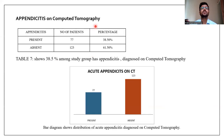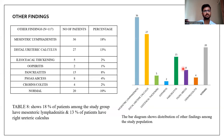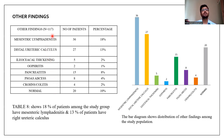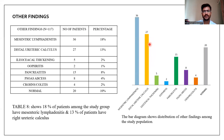On CT, 77 cases were found to have appendicitis diagnosed. Other findings which mimicked appendicitis included mesenteric lymphadenitis, distal ureteric calculi, ileocecal thickening, enteritis, pancreatitis, psoas abscess, and Crohn's or colitis. Of these mimicking conditions, mesenteric lymphadenitis was the most common, followed by distal ureteric calculus.